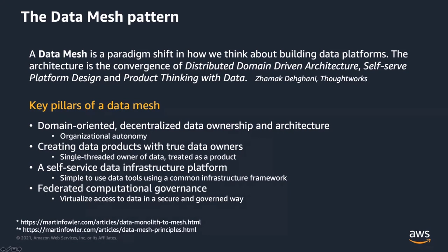The third pillar is a self-service data infrastructure platform — creating a simple-to-use set of tools that run on top of a common infrastructure framework. Instead of every department reinventing the wheel, creating their own infrastructure and operations, everything is built on top of a common infrastructure. You simply layer tools to help a line of business create their data, offer it as a product, check the quality, and turn that data into a product.